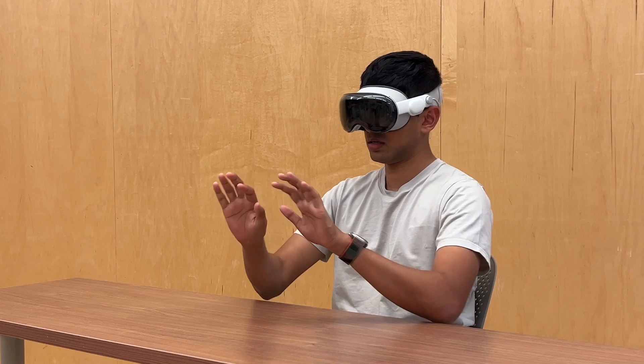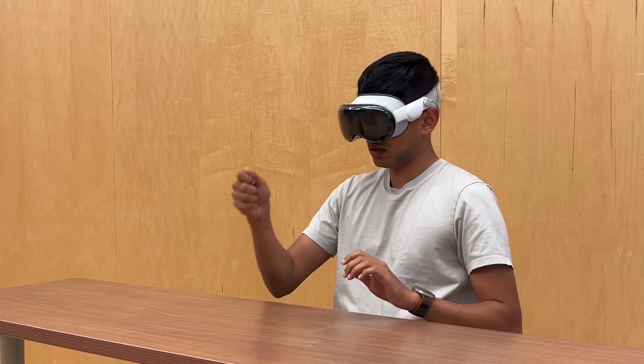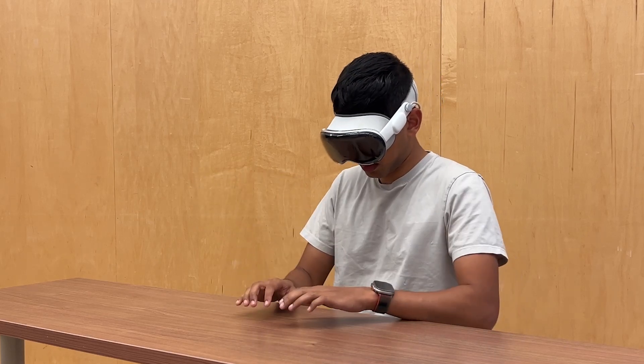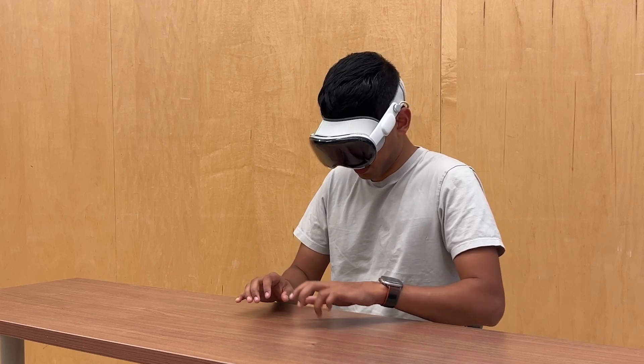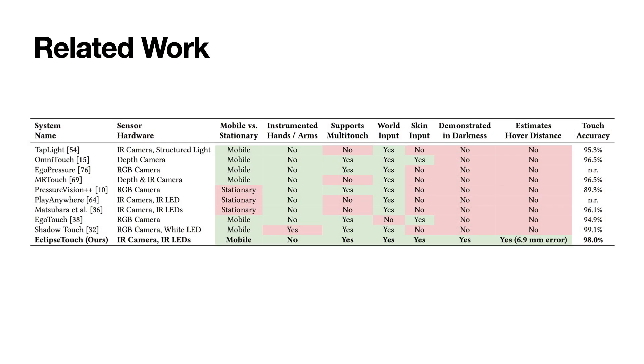An alternative to in-air XR interfaces is to use the surfaces around us for accurate and ergonomic tactile interaction. However, achieving high-accuracy ad hoc touch input across a variety of surfaces without external infrastructure in both light and dark settings and using low-cost and common headset sensors remains an open research problem.